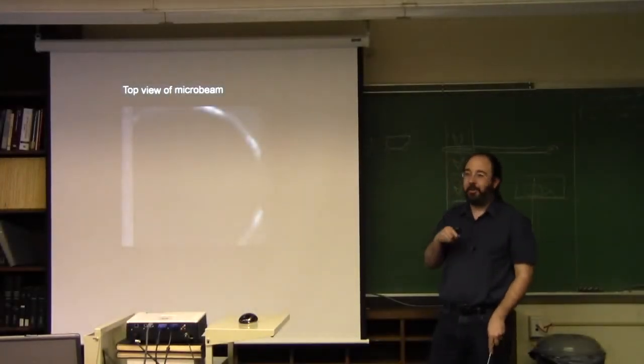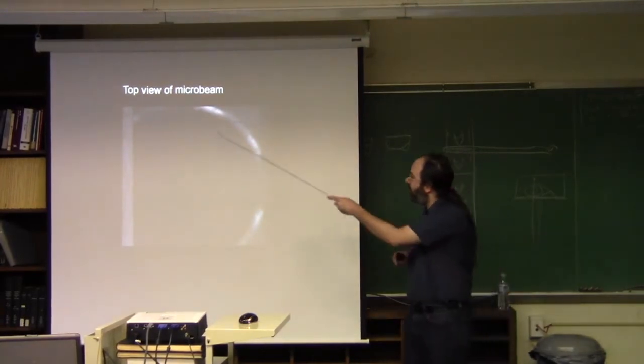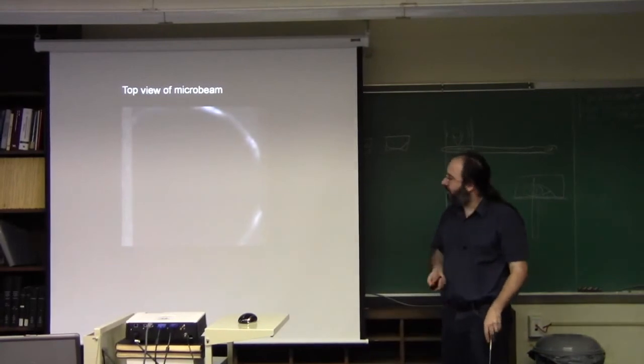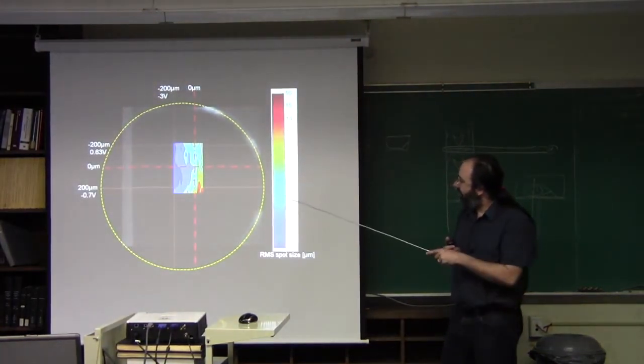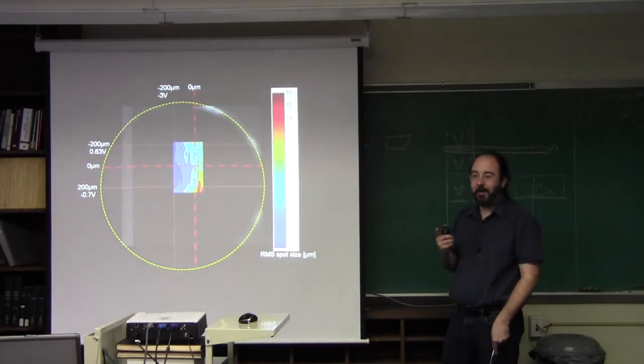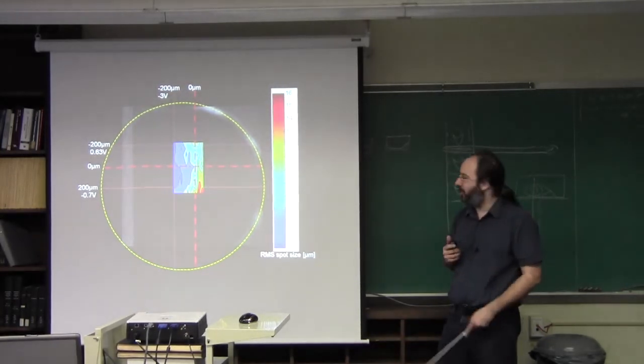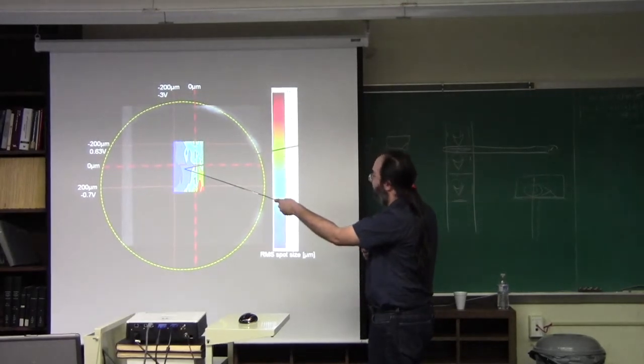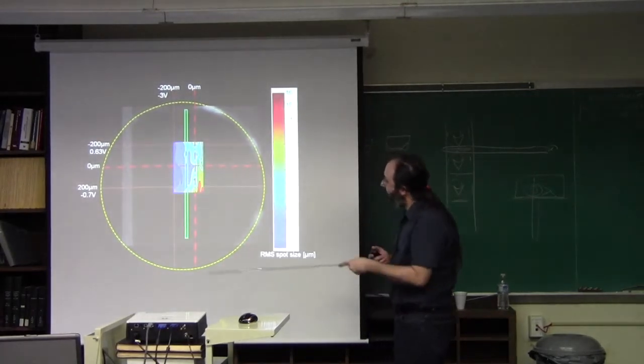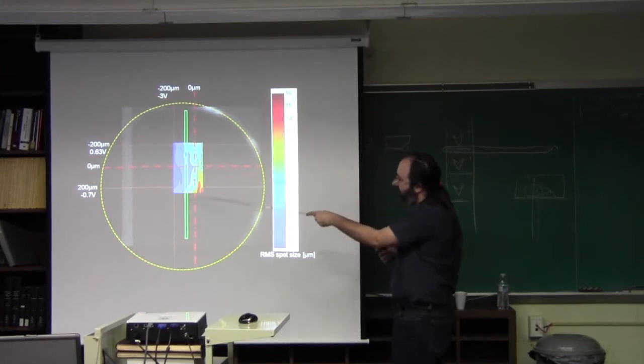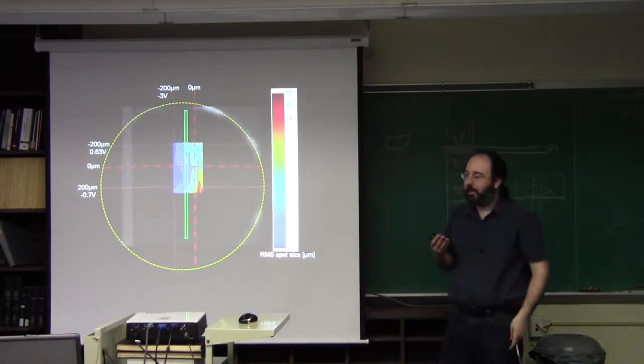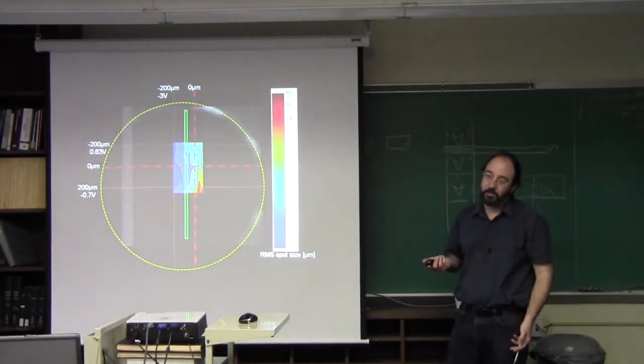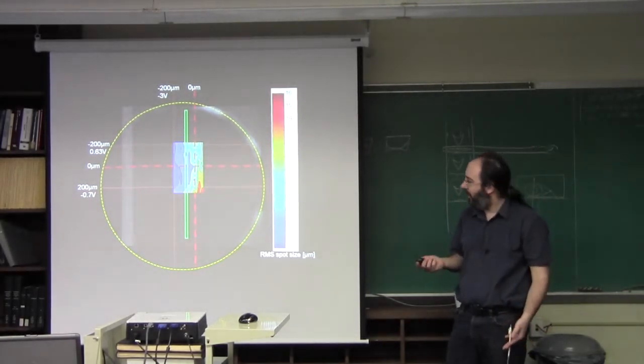If you look down on the accelerator exit window, which is sort of this circle, this is a view through the microscope. What we're seeing here is the spot size as a function of the deflection of the point-and-shoot. At the center here, we have maybe a 6 micron spot size. But if you position your channel sort of like this, you can pretty much guarantee that wherever you're deflecting the beam, your spot size is not degraded. This is really important because you want to be hitting the cells.